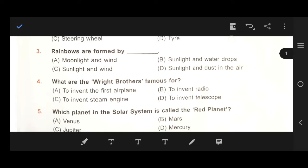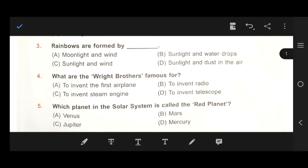Next, number 3, rainbows are formed by moonlight and wind, B sunlight and water drops, C sunlight and wind, D sunlight and dust in air. Our right answer is B, sunlight and water drops. Next, number 4, what are the Wright Brothers famous for? They are famous for inventing the airplane. So, our right answer is A.